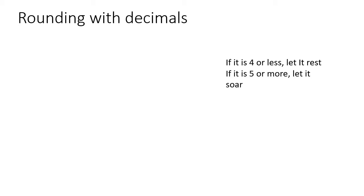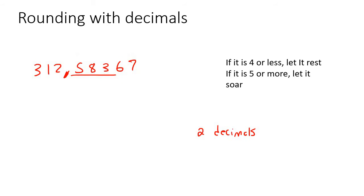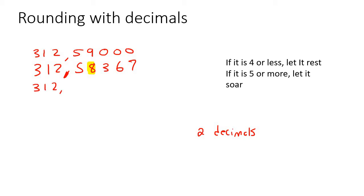There are also a few interesting things I need to add. So let's say we have the number 312,5836. The question asks you to round to the nearest two decimals. So what does two decimals mean? Well, here's the decimal — you look to the right-hand side, which are all called the decimals, and we only want the first two. So that means the second decimal is the last number — that's the number that might change. So our answer is either going to become 312,59 or 312,58.